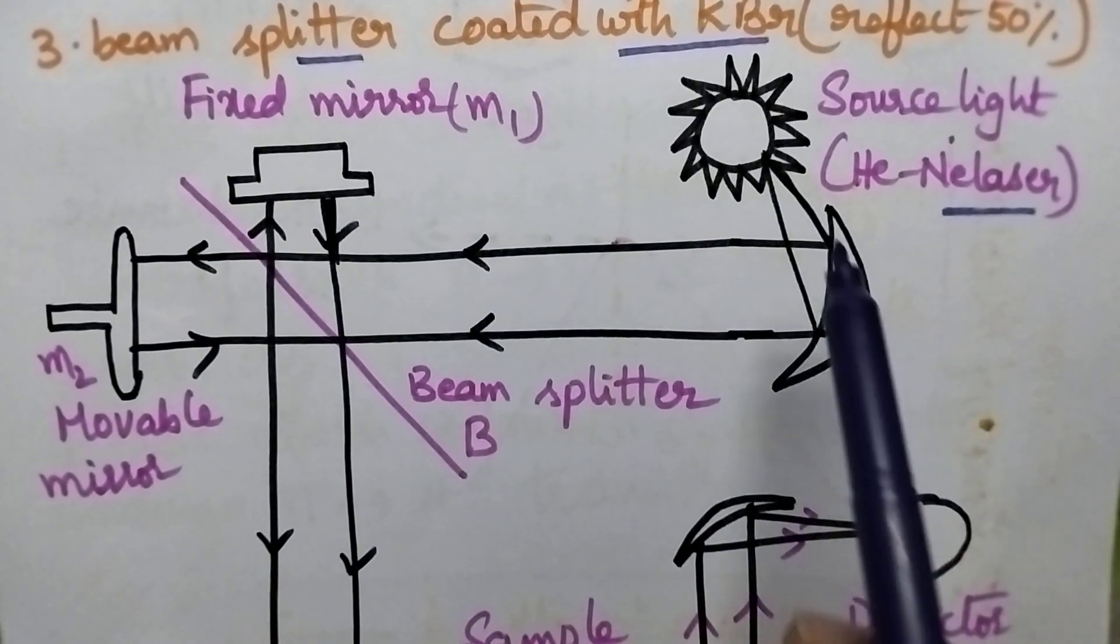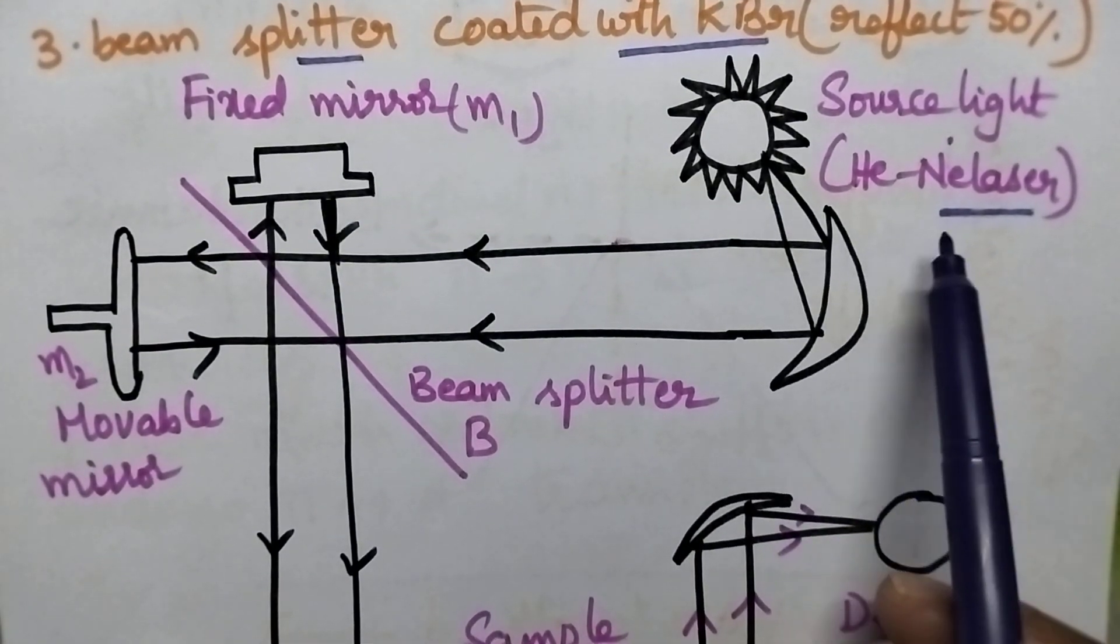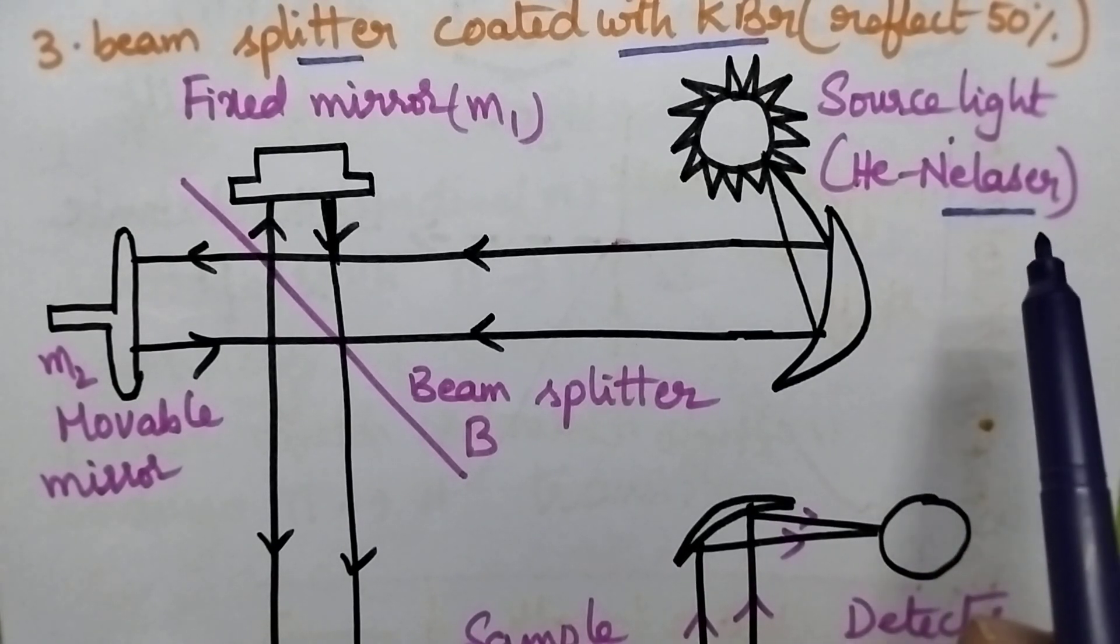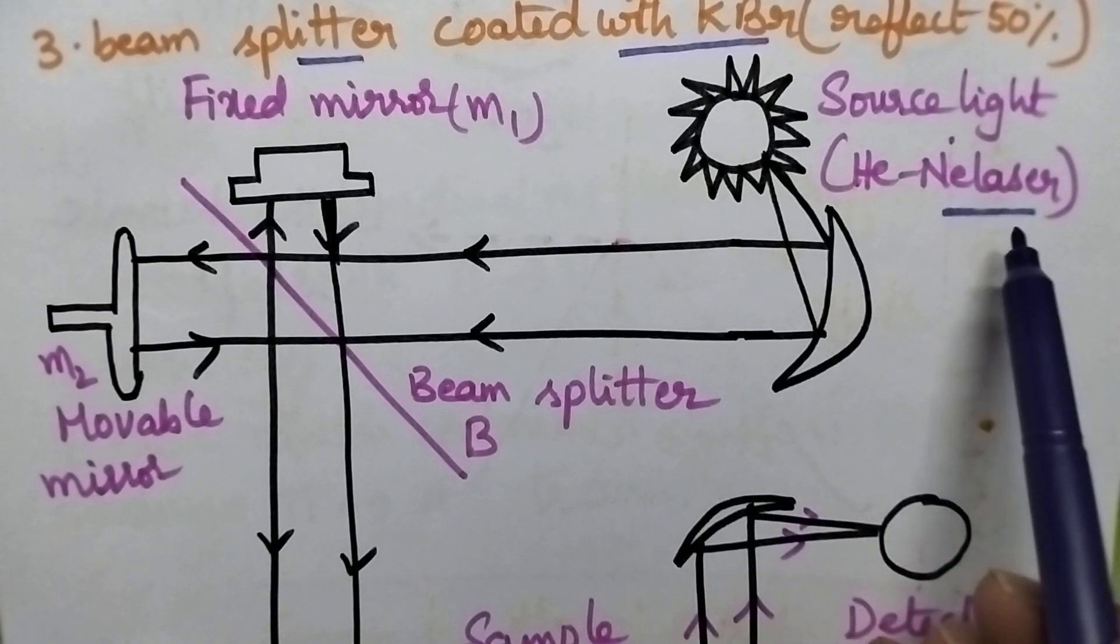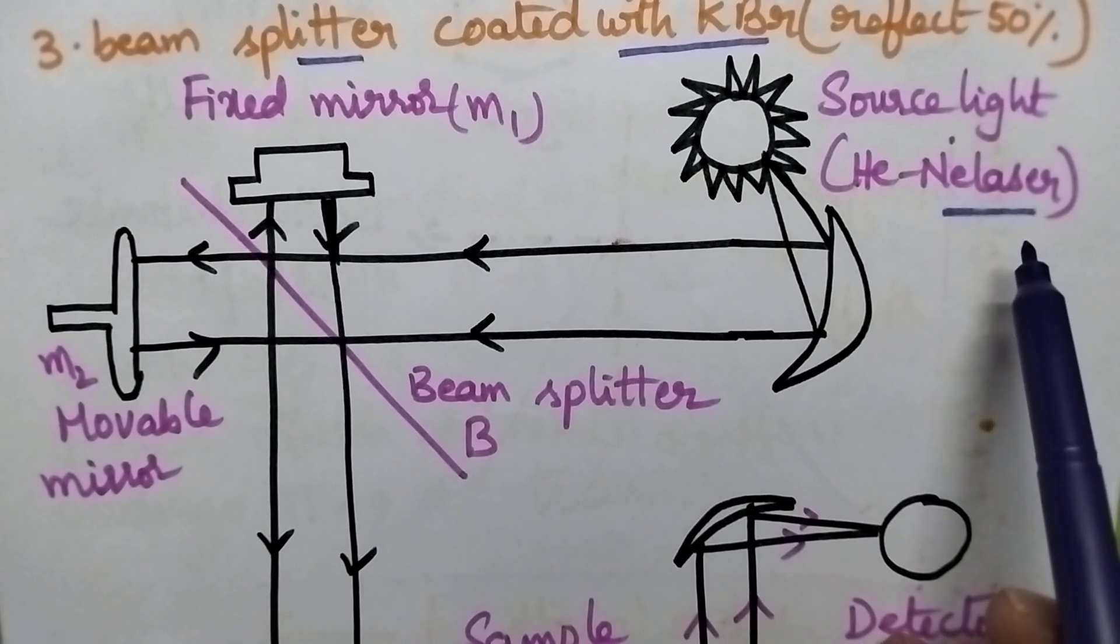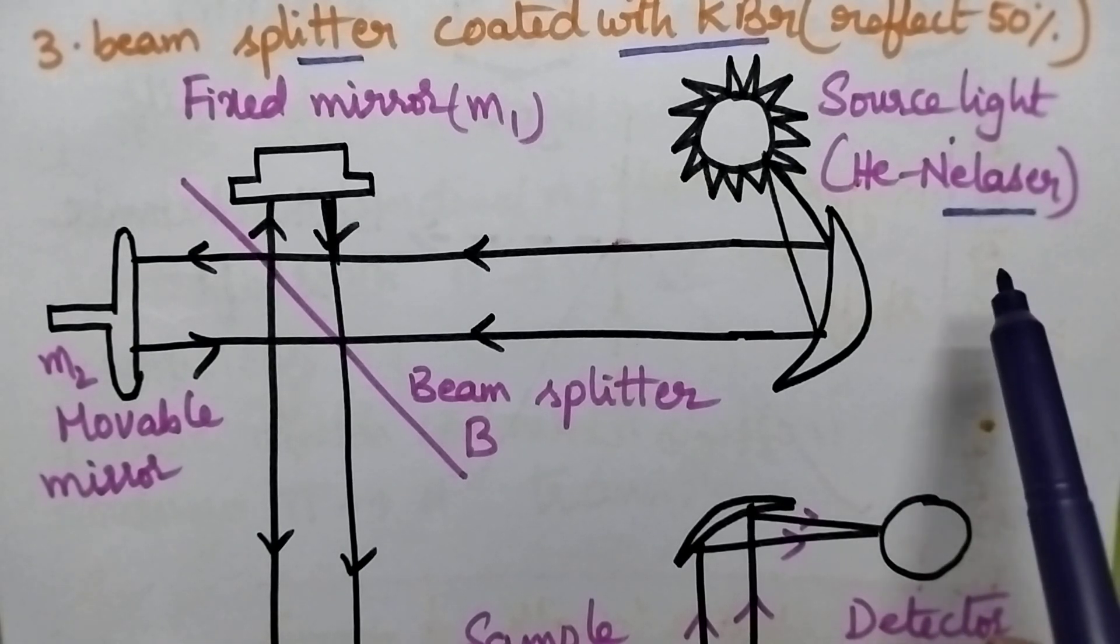Initially, the light is combined with a laser beam. Whenever the light source is combined with the laser beam, it provides the best reference for the instrumentation.